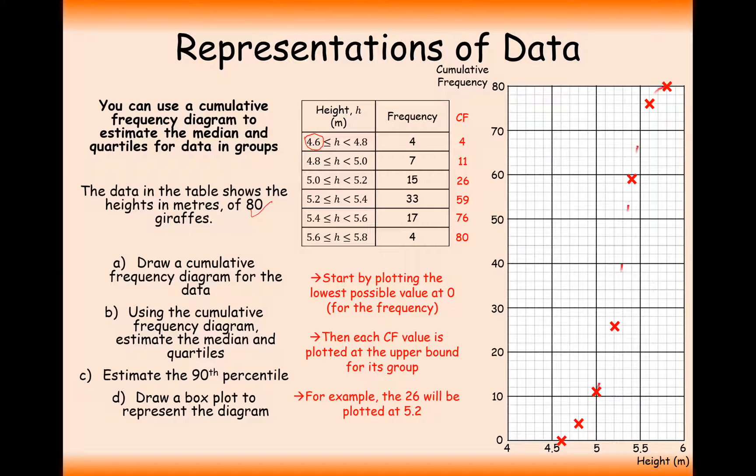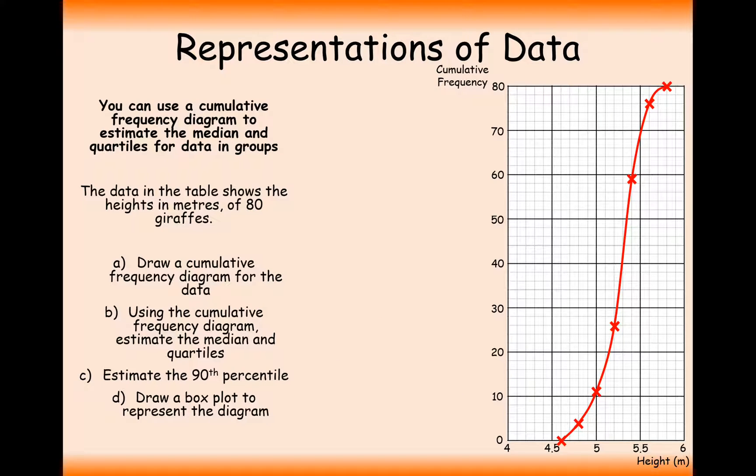And then the way we're going to connect these up is with a curved line that intersects through each of these points here. So it's not a line of best fit. It's not a jagged straight line. It's a curved line that goes through all of these coordinates exactly. So now that we've drawn this cumulative frequency diagram, we can use this to estimate the median and the quartiles.